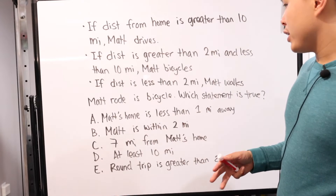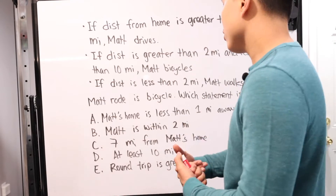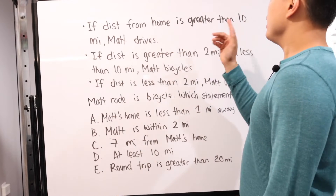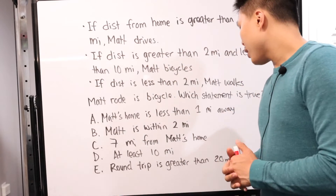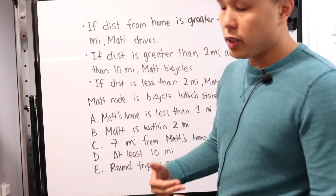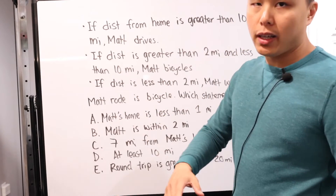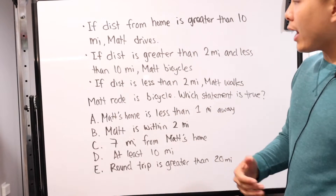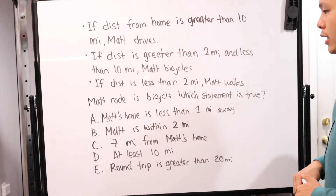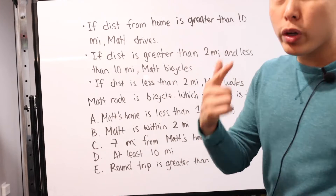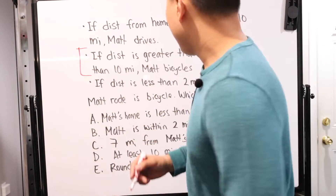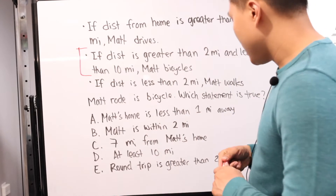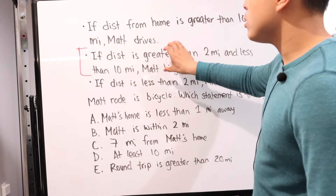Problem number four is very similar to the previous one, just with a little more conditions. If the distance from home is greater than 10 miles, Matt drives. If the distance is greater than two miles and less than 10 miles, Matt takes the bicycle. If the distance is less than two miles, Matt walks. Those are the three conditions. Now they tell you that Matt is visiting his friend Zachary and he rode his bike — so that tells us a great deal.